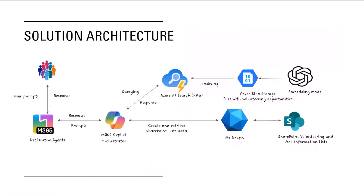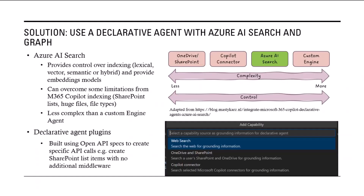From a solution architecture point of view, there's not a massive amount of code — it's all declarative. We've got a declarative agent, and we're using Azure Search to bring in documentation for the different charities, what initiatives they offer, and what help they need, and indexing that in AI Search. We're then using Microsoft Graph to put volunteering and user information into a SharePoint list, keeping track of who's doing what and when. We found it worked quite well with our disparate, differently-formatted data sources.